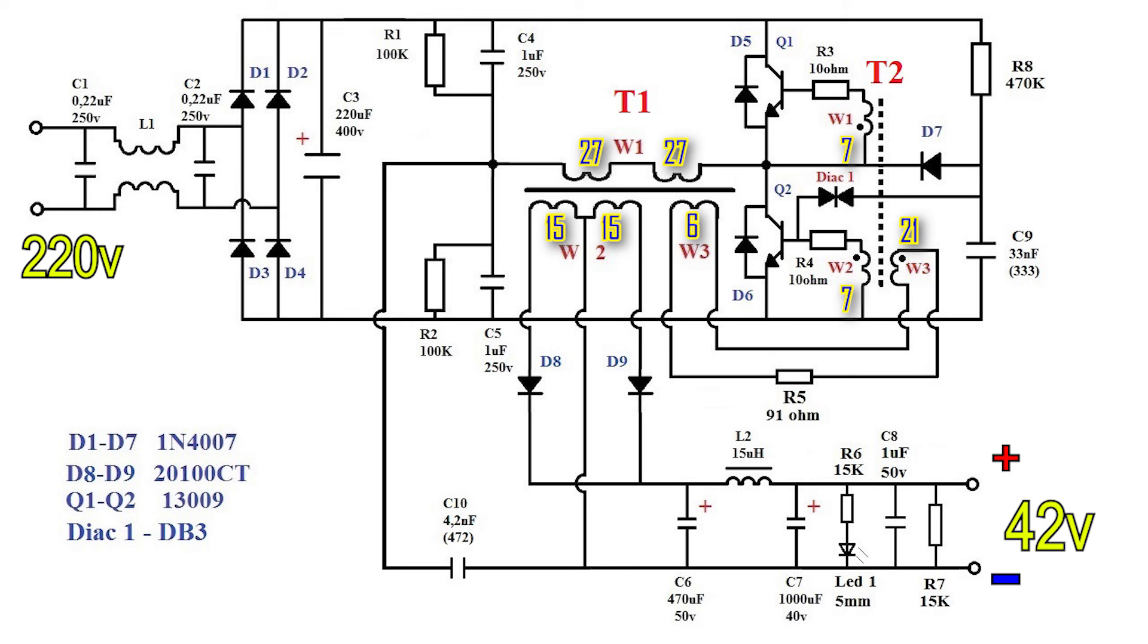With a power of 100 watts, capacitors C4 and C5 can be taken at 0.5 microfarads. If the power is even less, then the capacity can be reduced to 100 nanofarads.